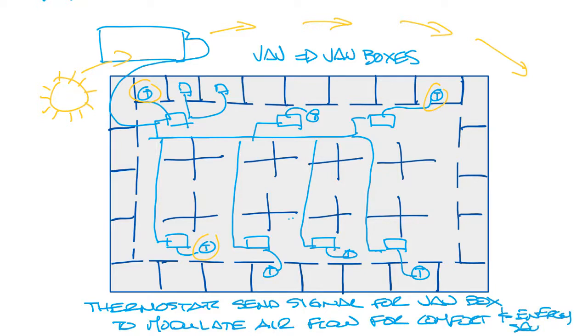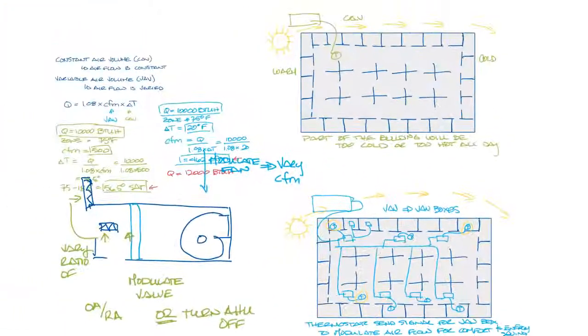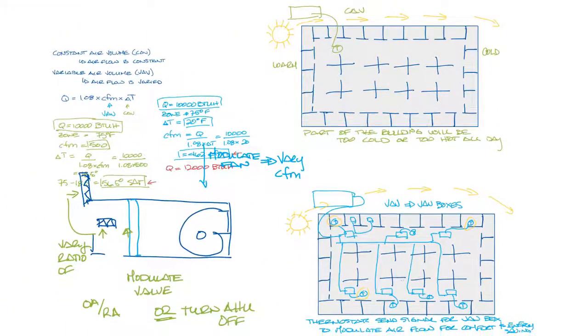So that's the simple overview of constant air volume versus variable air volume. We'll go into more detail on the VAV boxes in future videos. Don't forget to subscribe to this YouTube channel and thanks for watching.